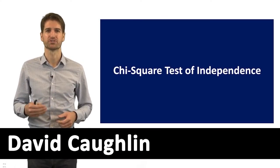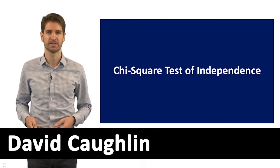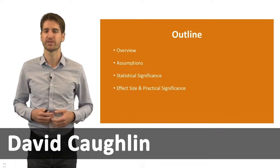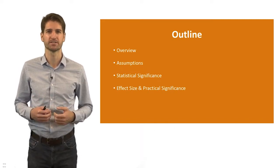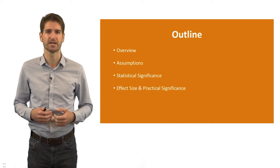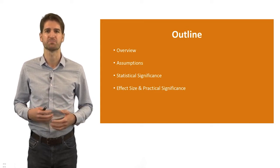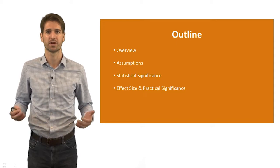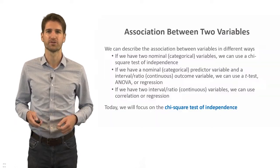In this lecture, we're going to cover what's called the Chi-Square Test of Independence. We'll start with an overview of what it is, the statistical assumptions that underlie it, as well as what statistical and practical significance mean in the context of a Chi-Square Test of Independence. Let's start with the overview.